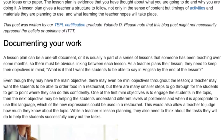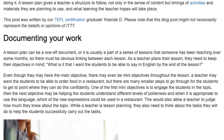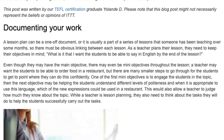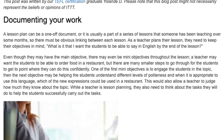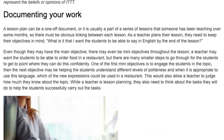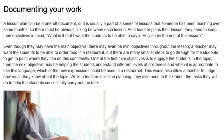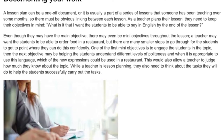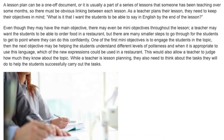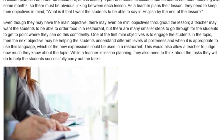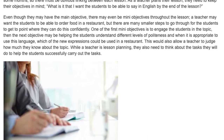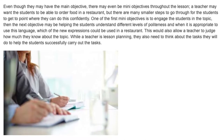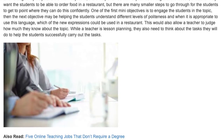A teacher may want the students to be able to order food in a restaurant, but there are many smaller steps to go through for the students to get to the point where they can do this confidently. One of the first objectives is to engage the students in the topic, then the next objective may be helping students understand different levels of politeness and when it is appropriate to use this language, and which new expressions could be used in a restaurant. This would also allow a teacher to judge how much they know about the topic.